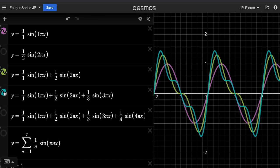If you add the third term, you get this turquoise function here. And then this is what happens if you add a fourth term.